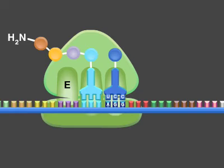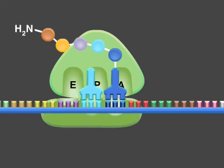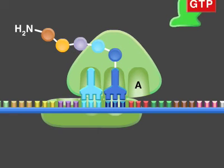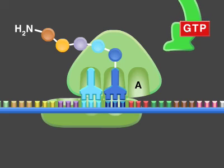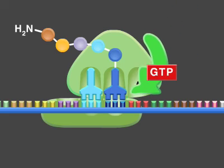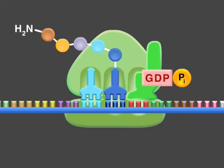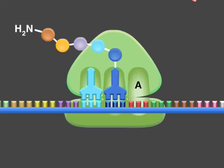The ribosome catalyzes the formation of the new peptide bond and undergoes a dramatic conformational change. Elongation factor G binds to the ribosome. Hydrolysis of GTP by elongation factor G switches the ribosome back to the state in which it can accept the next incoming tRNA.